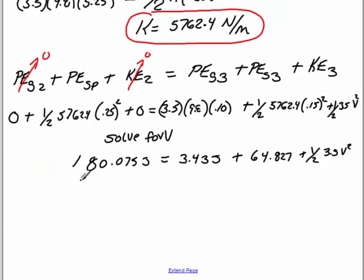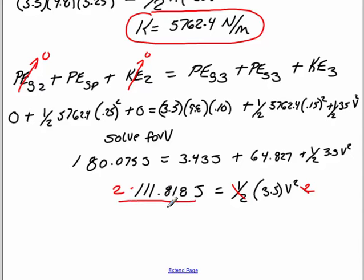We will move all this over to the other side. So I get 180.075 minus 3.43 minus 64.827. And that gives me a value of 111.818 joules. That is equal to 1/2 times 3.5 v squared. I multiply this side by 2, and this side by 2. Now I divide by 3.5 both sides. And then all I have to do now is take the square root. So multiply that by 2, divided by 3.5, second square root. It gives me a velocity of 8 meters per second.